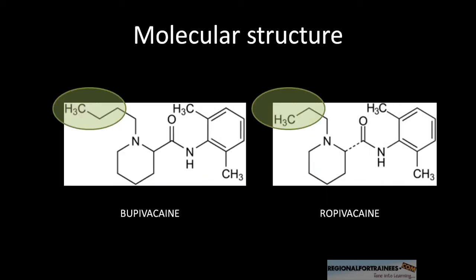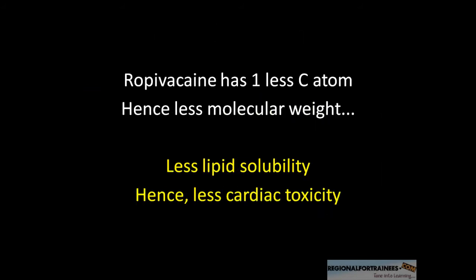The answer lies in molecular structure. As can be seen here, Bupivacaine has got one more carbon atom as compared to Ropivacaine, and it is the number of atoms that determines the molecular weight of any molecule. Therefore, Ropivacaine has less molecular weight compared to Bupivacaine. This is in turn related to lipid solubility — Ropivacaine has over 10-fold less lipid solubility than Bupivacaine, and lipid solubility confers toxicity to any amide local anesthetic.